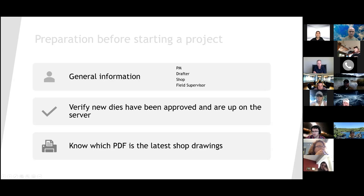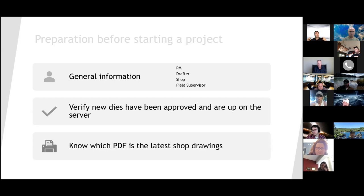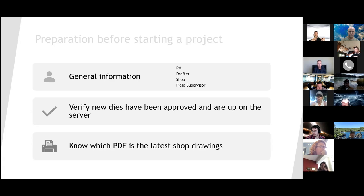Another thing we do: every job has unique dies — mostly 90% of them do. Always check and verify that any new dies have been approved and are up on the server. We will see later why it is important to make sure the dies are up to date and have been approved, as it all comes into play in our data and our detailing.